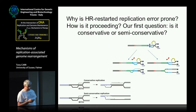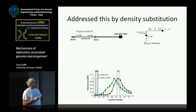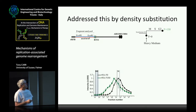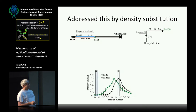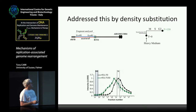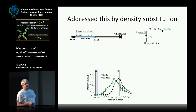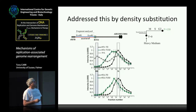We could address this by density substitution — a classic Meselson-Stahl style experiment, though technically quite difficult. We analyze a fragment where the replication fork runs in one direction; if the barrier is active, the DNA must be replicated by homologous recombination. We take synchronized cells grown in light medium, add heavy isotopes, and let them go through a single S phase. Without barrier activity, all DNA becomes heavy-light as expected. With the barrier active, all DNA still runs in the heavy-light region — so this is semi-conservative replication. We see absolutely no evidence of heavy-heavy DNA.